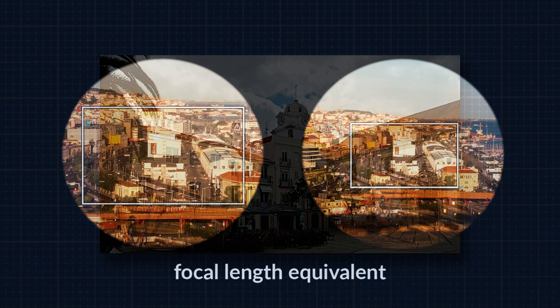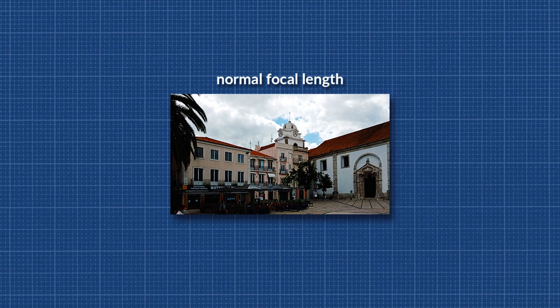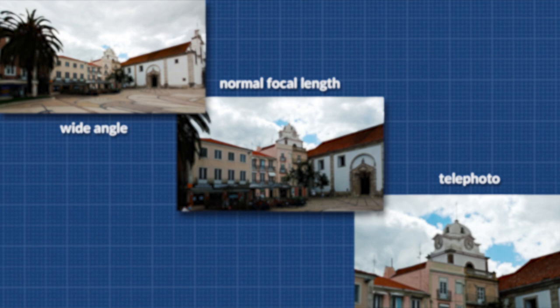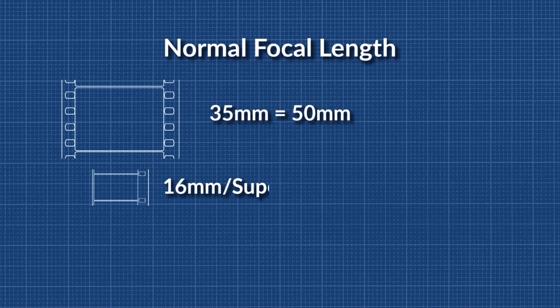Let's start with what is considered the normal focal length. In photography and cinematography, normal focal length describes a lens reproducing a field of view that appears natural to an observer. Here are the focal lengths considered normal for each film format. For 35mm formats, it's 50mm. For 16mm and Super 16, it's 25mm. For Super 8, it's 15mm.